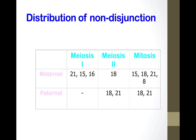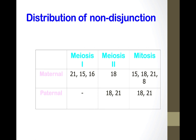Distribution of non-disjunction: for maternal meiosis 1, chromosomes 21, 15, and 16 are very common; paternal cases are rare. In meiosis 2, chromosome 18 is very common for mothers; fathers show chromosomes 18 and 21. In mitosis, chromosomes 15, 18, 21, and 8 are seen on the mother's side, and chromosomes 18 and 21 on the father's side.